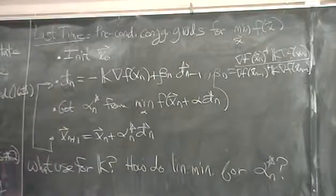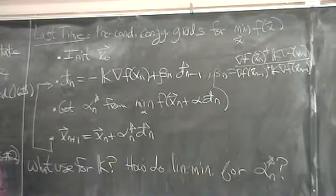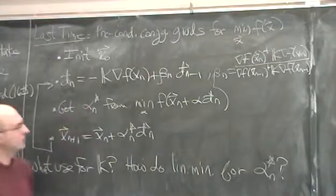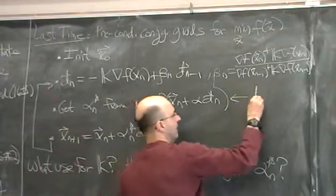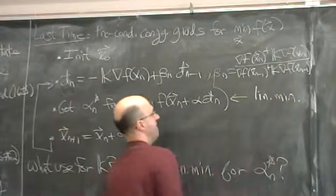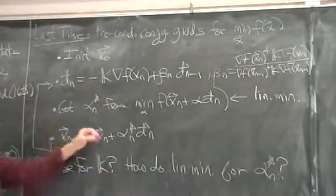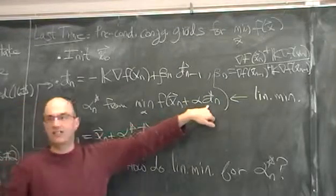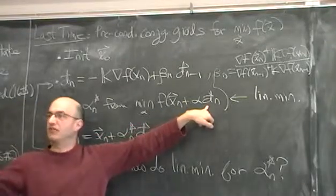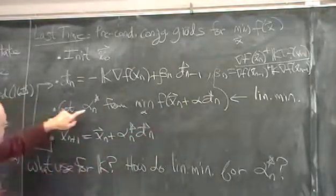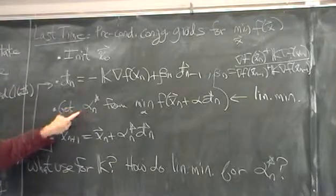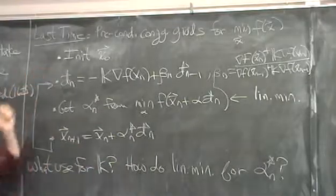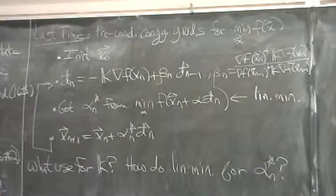In any event, once you've got that search direction, we have to decide how far to go along it. And so we decided that we'll do what's called line minimization, or I like to call it lin-min for short. And basically what you do is you find the alpha that would minimize the energy just at least along this one search direction that you've picked out. Once you find that ideal alpha, you update the state of your system to that new point, and then you're ready to iterate. That's the overall algorithm.